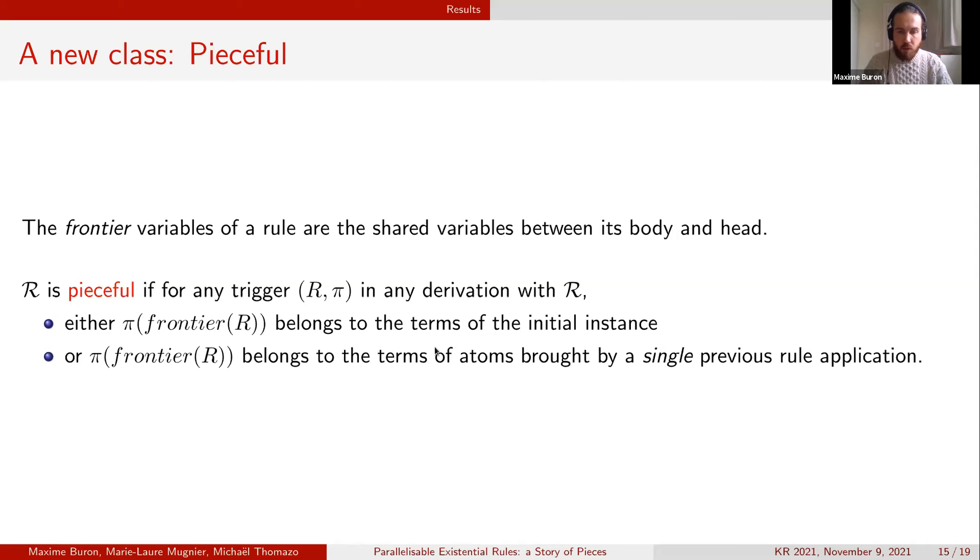In the first case it will generate a new piece into the chase. Otherwise we allow the frontier variable to be mapped to the terms of the atoms brought by a single previous rule application, and in this case it means that we will extend an existing piece with atoms that use only terms that appear in this piece or that are new nulls.